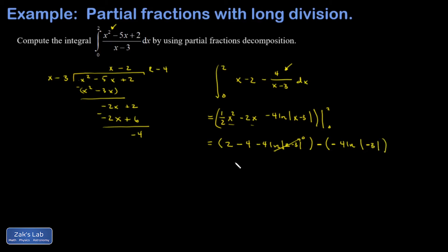And then I have a negative 4 natural log absolute value of 0 minus 3. And of course, the natural log of a negative is not defined, but I have those absolute value bars. So I'm going to have absolute value of 3 there. So I end up combining constants here with a negative 2 plus 4 natural log 3. And we're done.